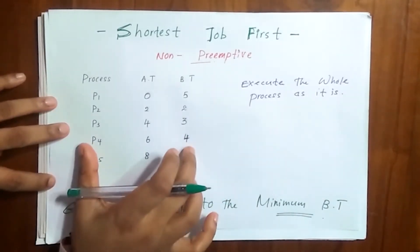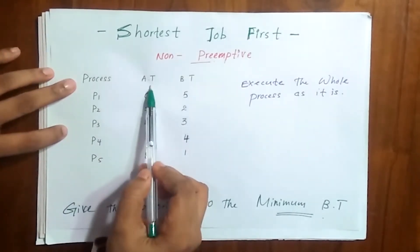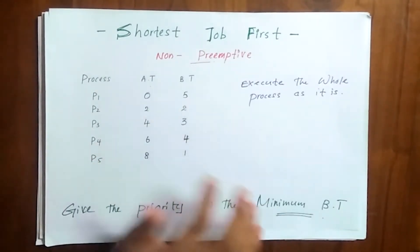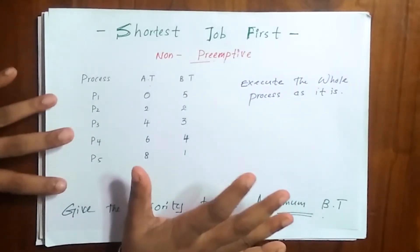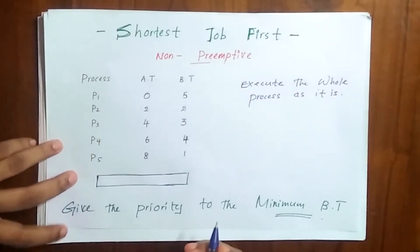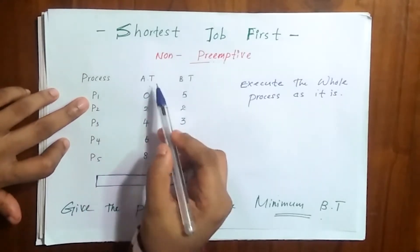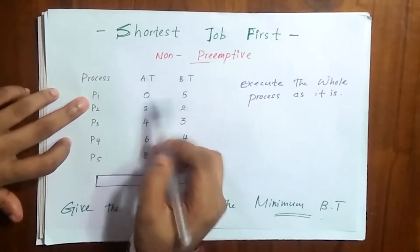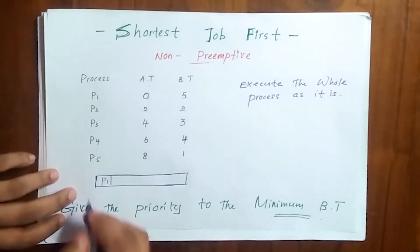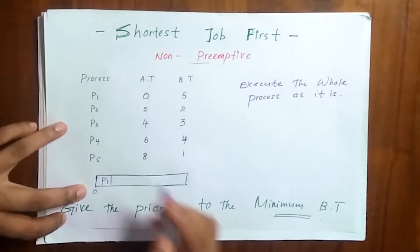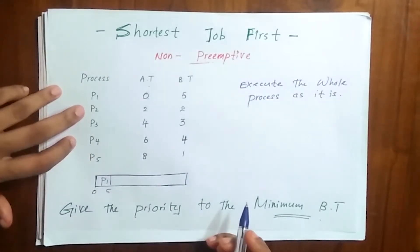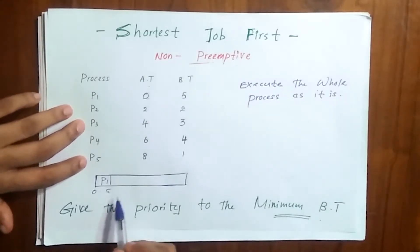Same as in First Come First Serve, we have a process arrival time and burst time. I think now you are familiar with the table and columns. Let's start drawing the Gantt chart. We have to place the processes here. Now let's see P1. Its arrival time is zero, that means without any doubt P1 arrives first. Its arrival time is zero and we have to write the burst time here, which is 5.